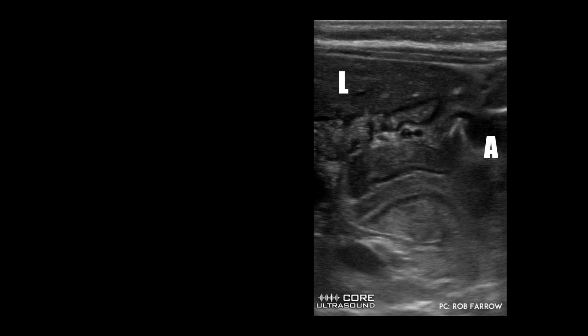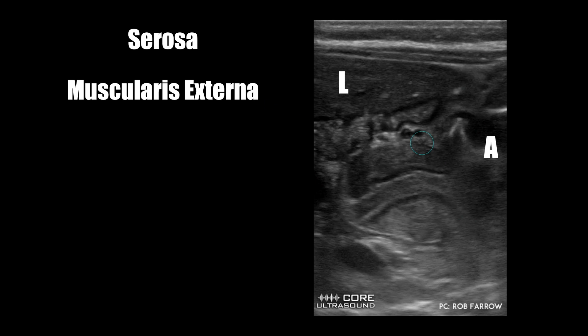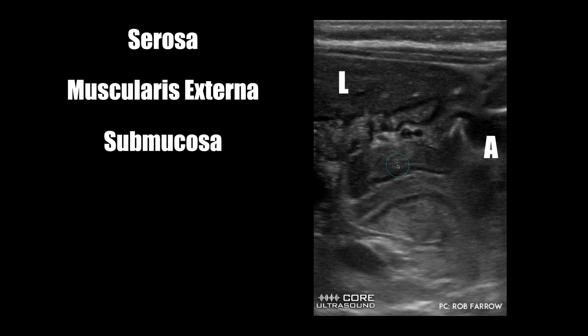Now that we've identified the pylorus on ultrasound, let's take a second and understand the anatomic layers of the pylorus on ultrasound to ensure we're getting the correct measurements. The first layer is the serosa — it's hyperechoic and on the outside of the pylorus. This is then followed by the muscularis externa, and this is the portion of the pylorus that actually hypertrophies when you have pyloric stenosis. This is the most important measurement you make for the diagnosis, so it's important to make sure you're not including the serosa or the underlying submucosa when you make that measurement.